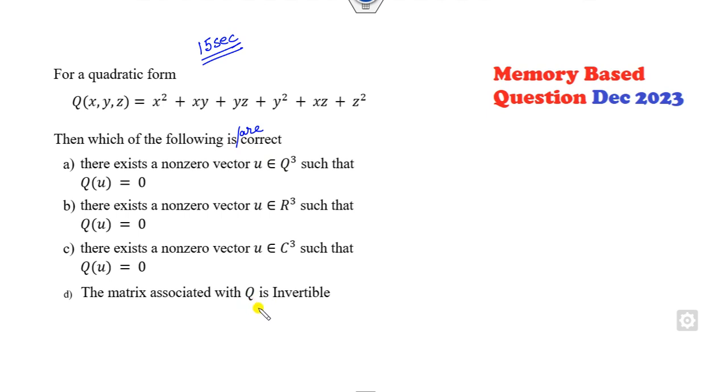That's a very interesting question. How can you solve this question within 15 seconds? Always remember that whenever there is a question about a non-zero vector such that Q of this is 0, what does it mean in all of these three cases? Can you think about any pair so that the value of Q will be 0 and this number should be non-zero?